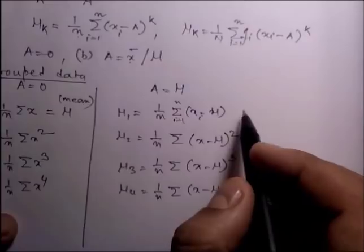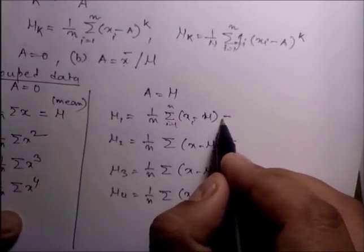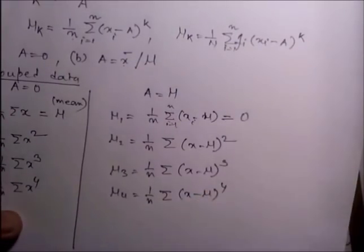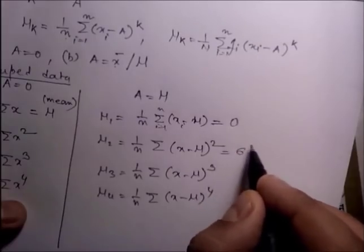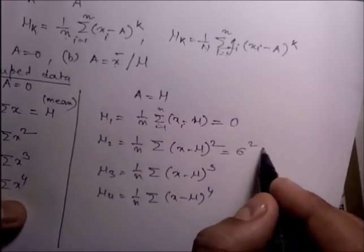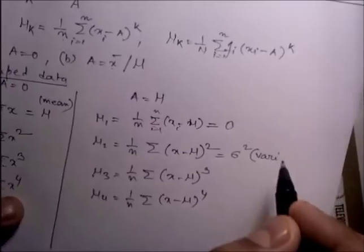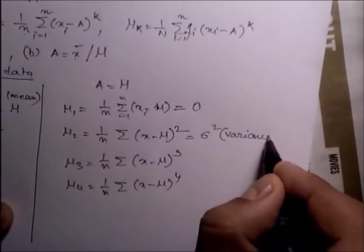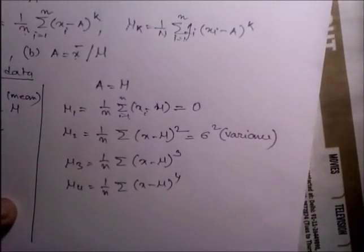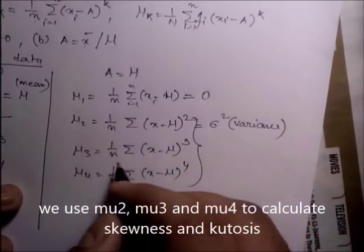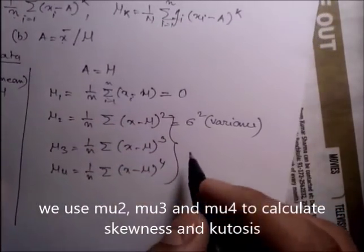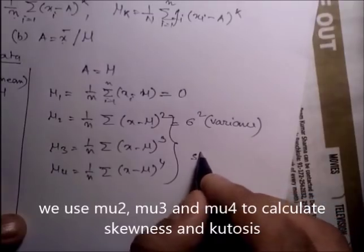The value of mu_1 always should be 0 — that is the first property of the mean. The second moment mu_2 is nothing but sigma squared, also called variance. We use mu_2, mu_3, and mu_4 to calculate the skewness.